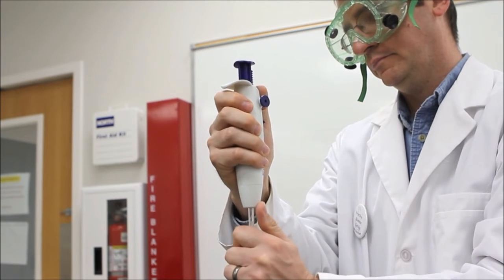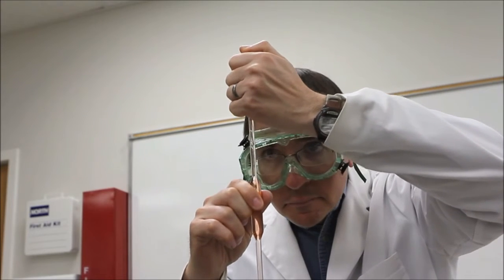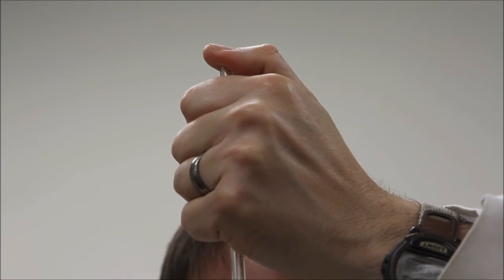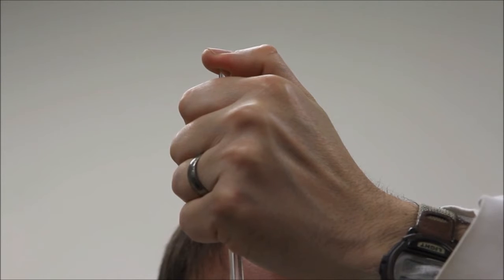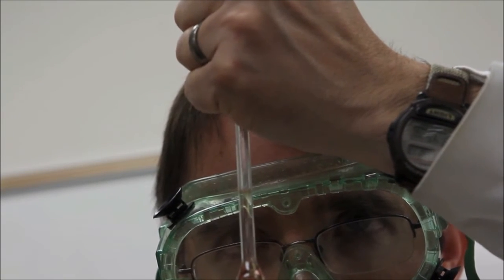Remove the pipette pump with one hand and immediately cover the mouth of the pipette with your thumb or forefinger of the other hand. Keeping pressure on the pipette mouth, raise the pipette so the etch mark is at eye level. Carefully control the pressure exerted by your thumb to slowly drop the liquid level until its meniscus is exactly even with the etch mark.